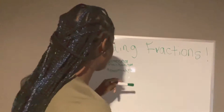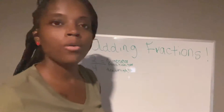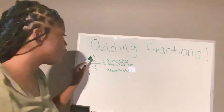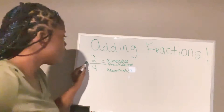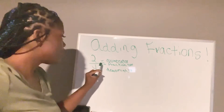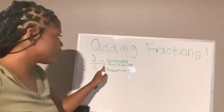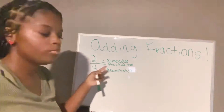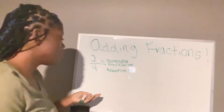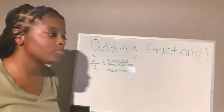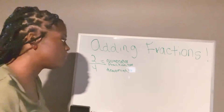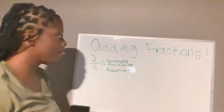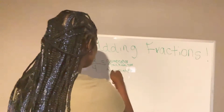Okay, adding fractions. The two is the numerator — the top number is the numerator. This little sign, two over four, this sign right here is a fraction bar. And I say fraction bar so you can know to divide. The number four is the denominator. So, numerator.